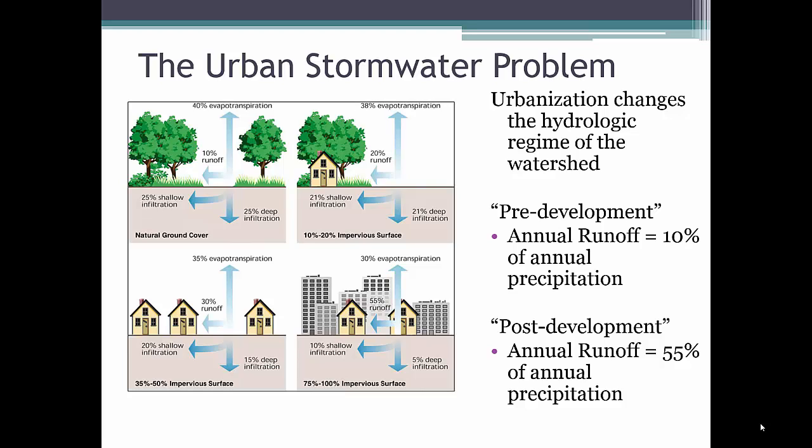At a very basic level, the problems associated with urban stormwater can be attributed to the change in impervious surfaces that result from urbanization. As this figure shows, approximately 55% of precipitation that falls onto the land surface leaves the area as surface runoff under typical urbanization conditions, compared to pre-development conditions where only 10% of the precipitation resulted in surface runoff. The takeaway point is that urbanization creates impervious surfaces that do not allow precipitation to infiltrate into the groundwater nor provide areas for vegetation to evapotranspirate precipitation.